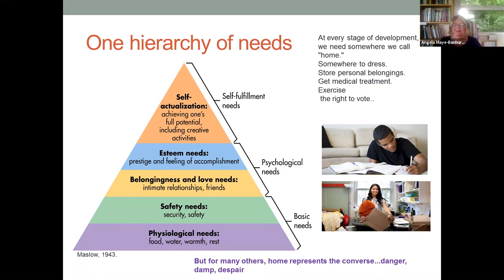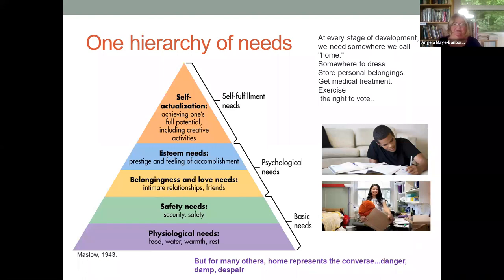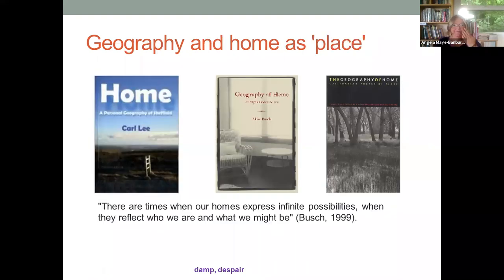It's also worth pointing out that for many people, home represents a very different place of being. It may be somewhere perilous — somewhere they feel threatened, where they experience routine violence, or where they are being exploited. Home, as place, is laden with all these different attributes, and it's important to think about those as we consider the importance of place in geography.